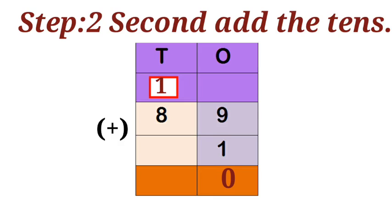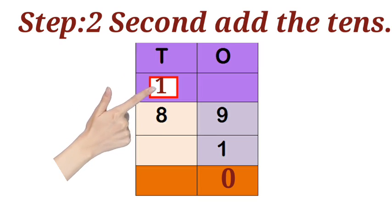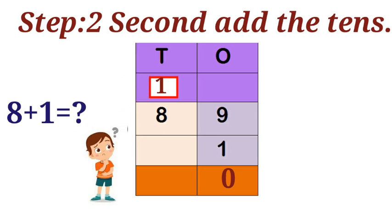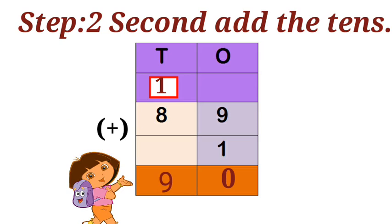Step two: second add the tens column. Eight in the mind. Remaining value plus adding one. Eight plus one is equal to, what is the answer? Nine. The answer is nine. The total sum: ninety. Did you understand students?